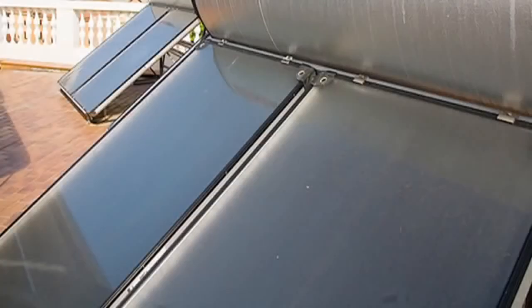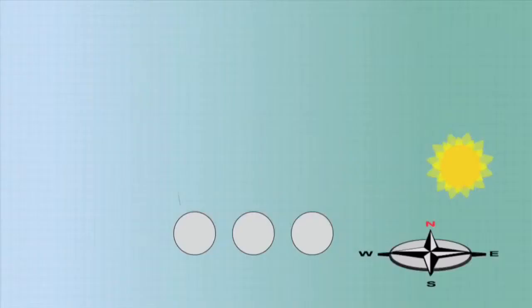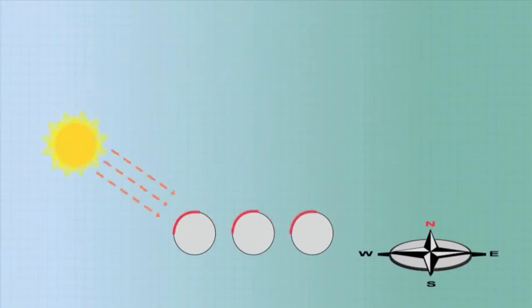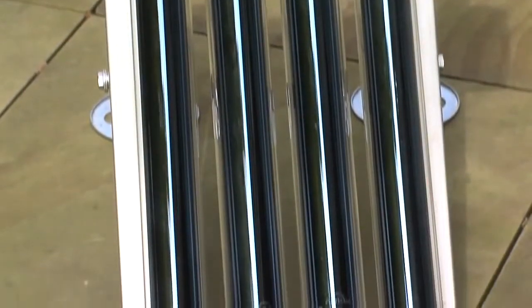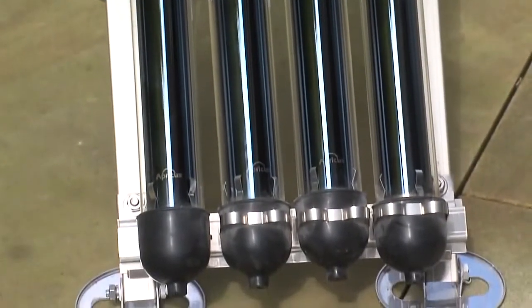There are two collector types to choose from: flat plate and evacuated tubes. Evacuated tubes have the advantage of receiving perpendicular radiation for a greater part of the day. This, combined with their vacuum insulation, means good winter performance.